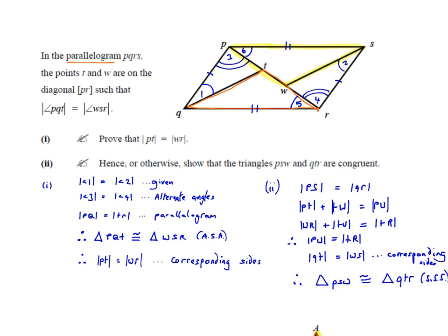To prove two triangles are congruent, you don't have to prove all sides and all angles are equal — just three things. There are four methods: side-side-side, angle-side-angle, side-angle-side, and right angle-hypotenuse-side. Our job is to figure out which one is the easiest to use.